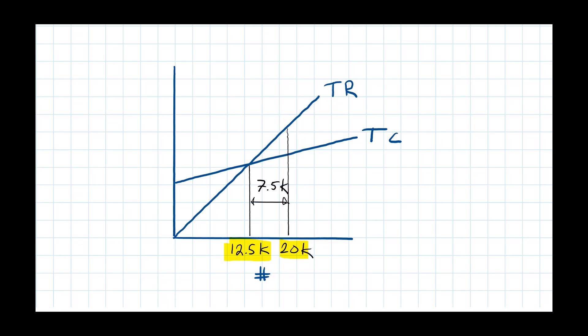So we can express the margin of safety here. In units, sales can drop by 7,500 units and we hit the break-even point. Or, as a percentage of sales, that would tell us that sales could drop 37.5% before we break even.